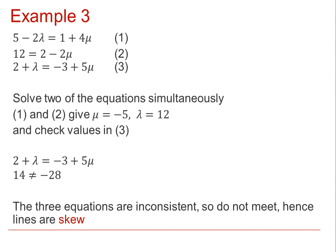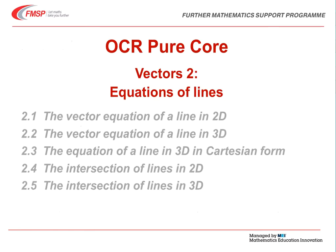The three equations are therefore inconsistent. Hence, the two lines L1 and L2 do not meet. There is no point of intersection. Hence, we can state that the two lines are skew. This was the last video in the second vector series.